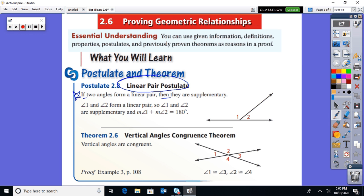The first one is postulate 2.8, the linear pair postulate. You guys learned linear pairs back in the first chapter. If two angles form a linear pair, then they are supplementary. So here is your conditional: if this, then this. And here's a picture of it. Angles 1 and 2 form a linear pair, so angles 1 and 2 are supplementary and add up to 180.